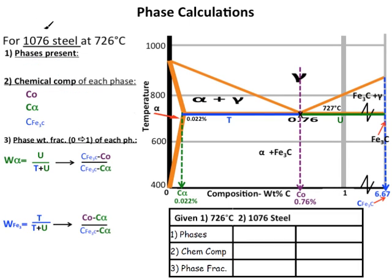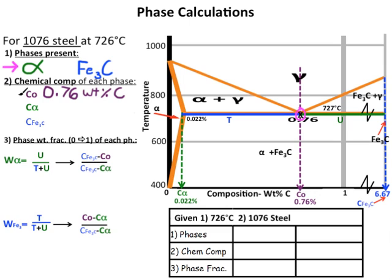Now let's try a two-phase region example. For the same eutectoid 1076 steel at 720 degrees Celsius, which is 1 degree below the eutectoid temperature, identify the same three things as last time. First, we determine where we are using the given conditions, so 0.76 weight percent carbon and 726 degrees Celsius puts us at this x right there, which is in the alpha plus iron carbide region. So our phases present are alpha and iron carbide, and our overall composition is 0.76 weight percent carbon.